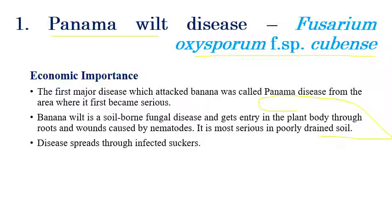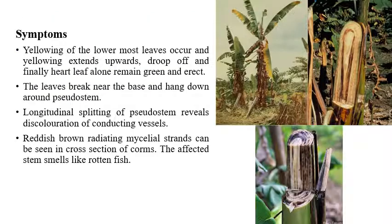The pathogen enters the plant through roots and wounds. The severity of Panama wilt disease can be associated with nematodes — if this disease is combined with nematode infection, the severity will be much greater. The disease spreads mainly through infected suckers, which are the planting and propagating materials of banana.